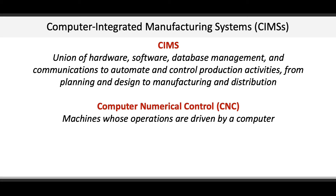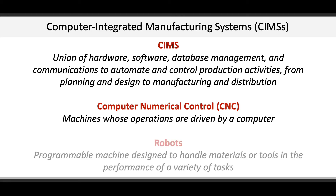Autonomous vehicles are also an example of CNC. CIMS might also include robots, which are programmable machines designed to handle materials or tools in the performance of a variety of tasks, such as welding in an automobile manufacturing plant.